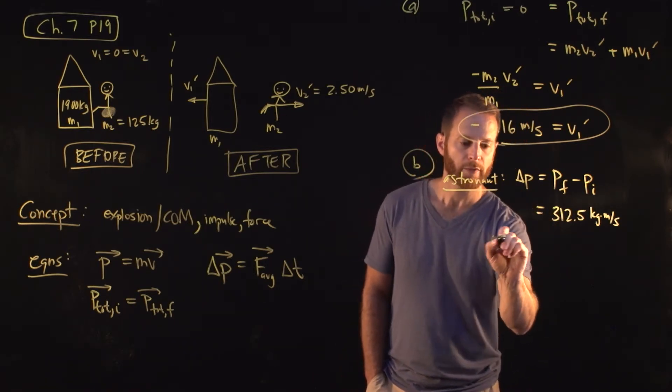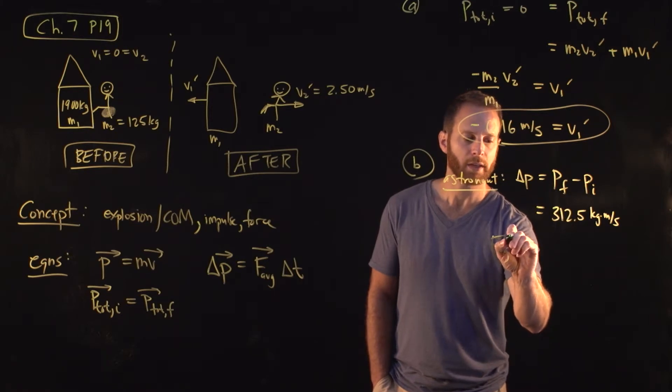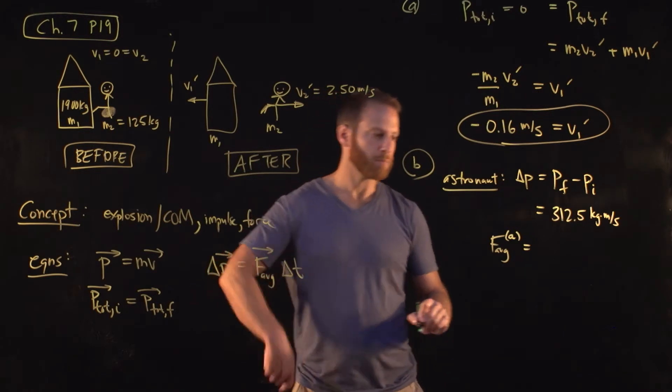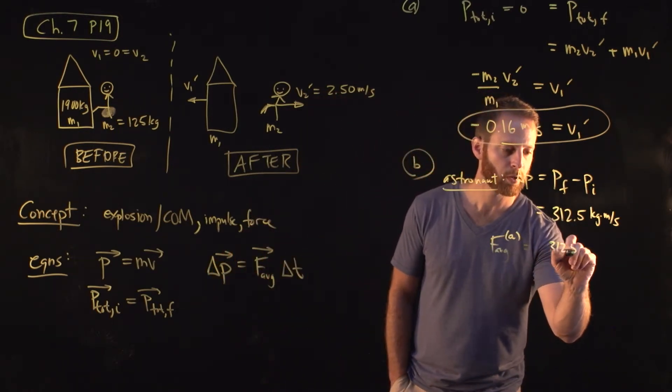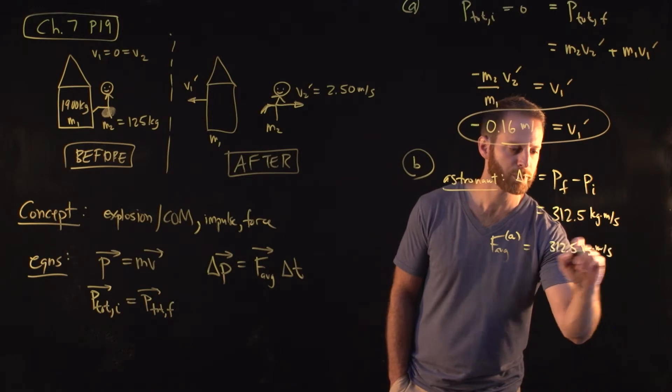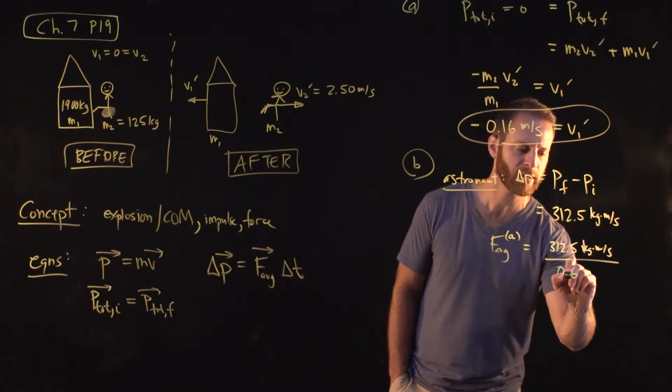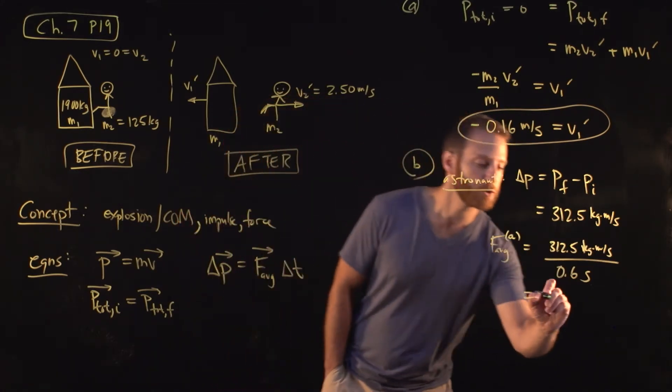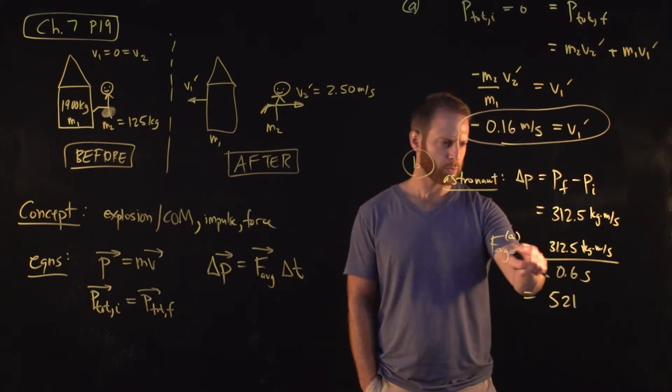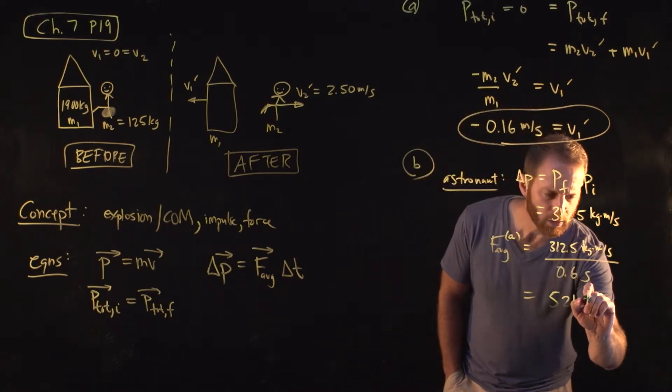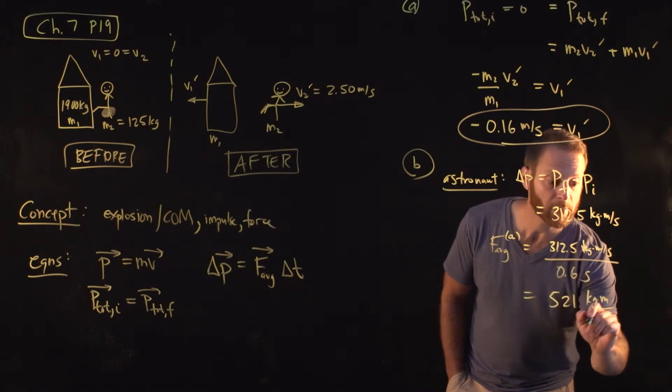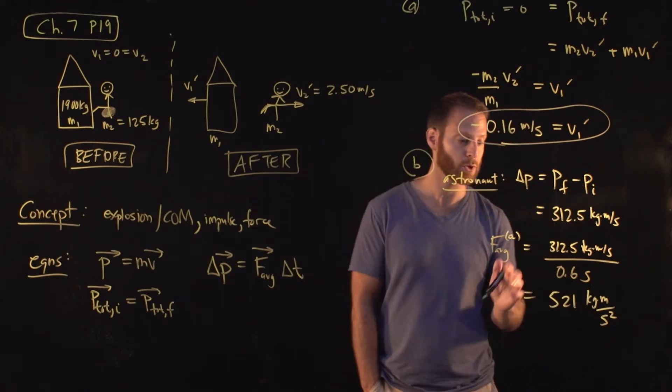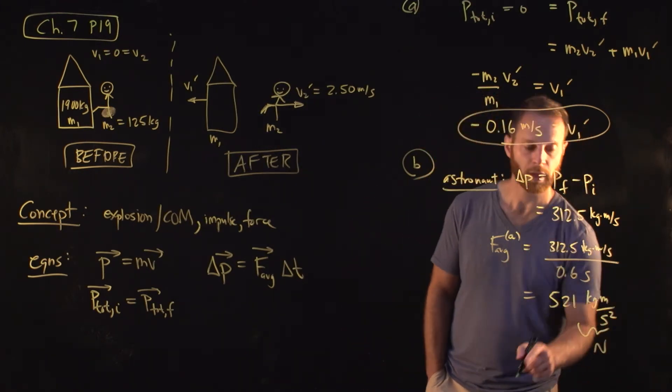Therefore, the average force acting on the astronaut is given by delta P divided by delta T. In other words, 312.5 kilograms times meters per second, divided by the time, 0.6 seconds. And this turns out to be approximately 512. Let's think real quick. What are the units? It's kilograms times meters divided by seconds, divided by seconds. In other words, divided by seconds squared. That's a newton. That's supposed to be the unit for force, so we're in good shape. This is a newton, 512.